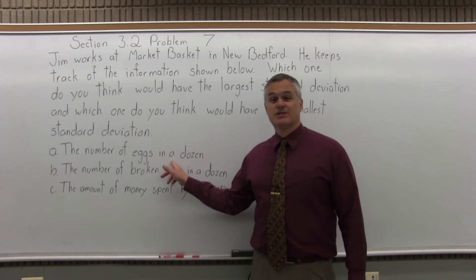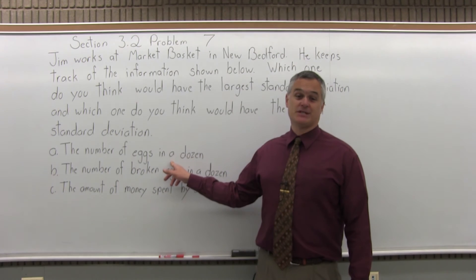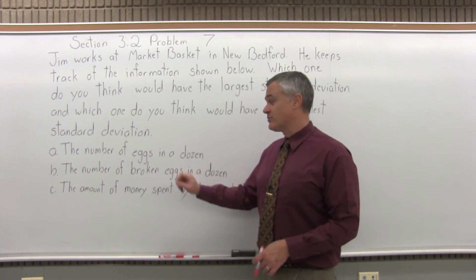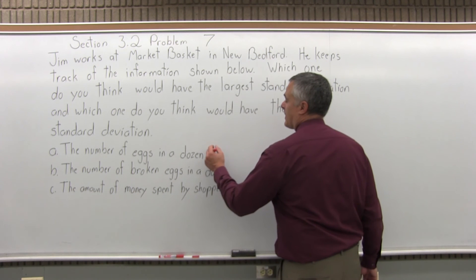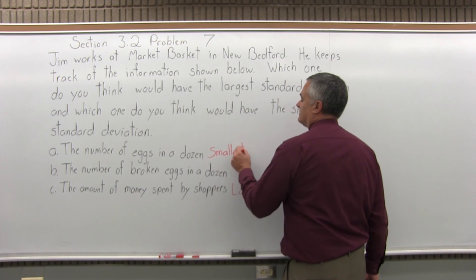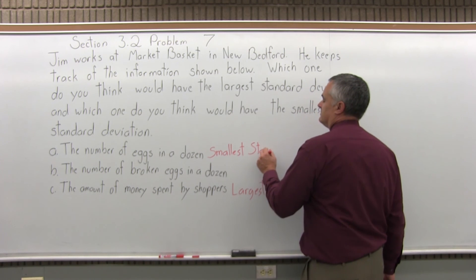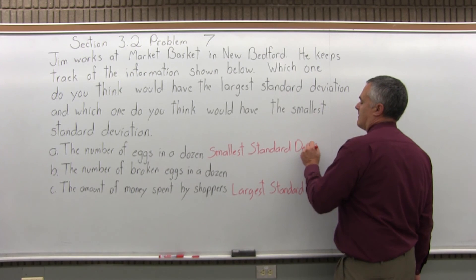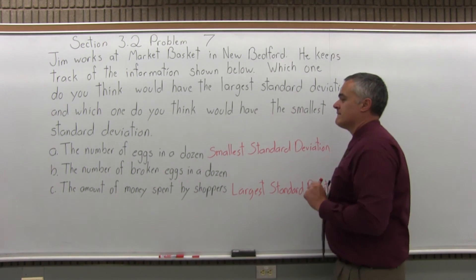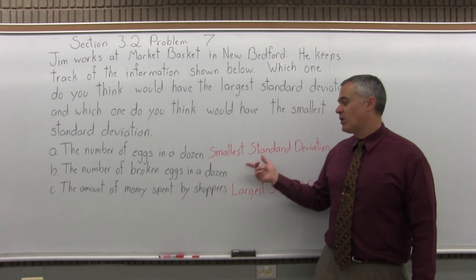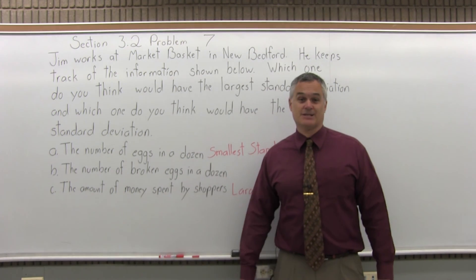And the number of eggs in a dozen would certainly be the smallest. That would have a standard deviation of zero because it's the same answer every time, 12. So that would be smallest standard deviation. And then number of broken eggs in a dozen would be small, but not as small as the number of eggs in a dozen.